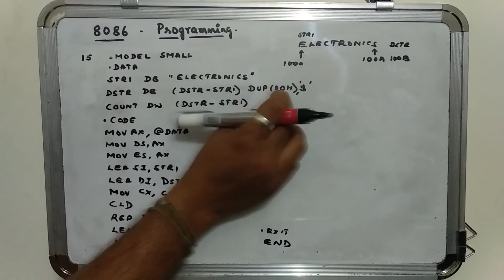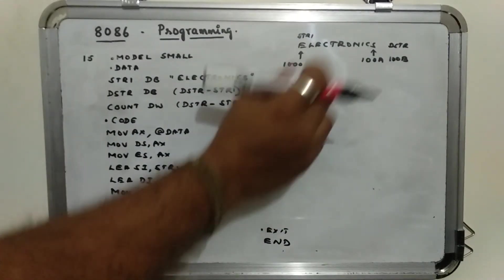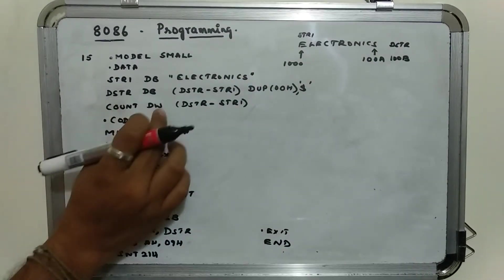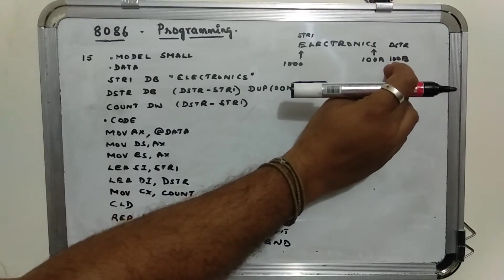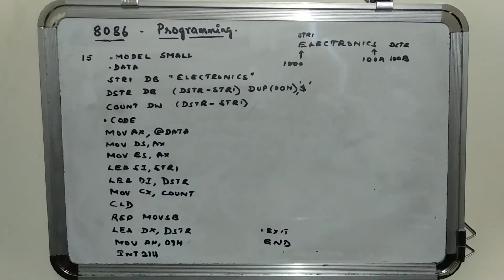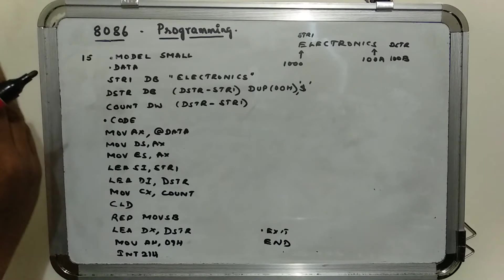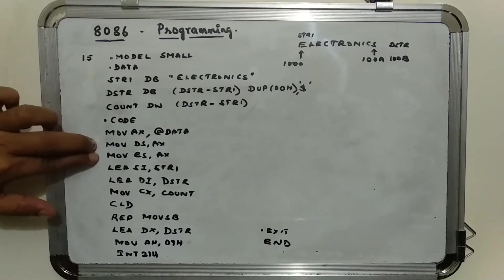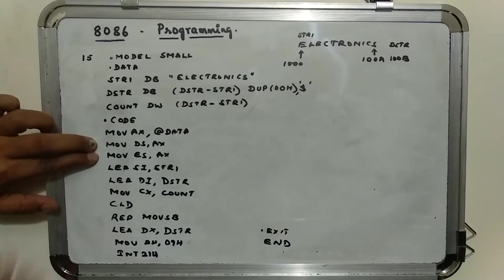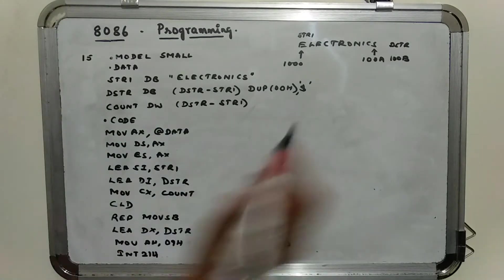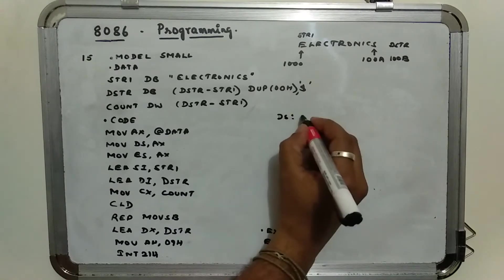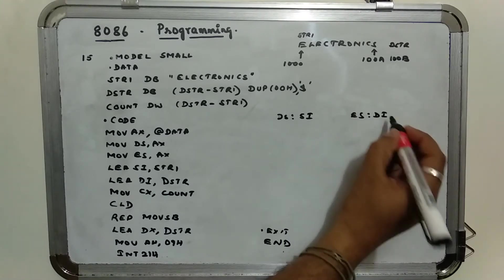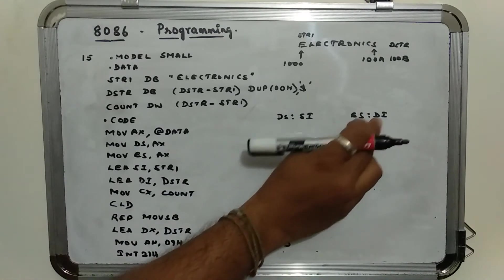We are transferring the data from the data segment to the extra segment because string instructions work from data segment to extra segment. These two lines are defining the data segment. We make the data segment and extra segment the same. In data segment, the string pointer is SI (source index), and in extra segment, the string pointer is DI (destination index). This is the important point to note.